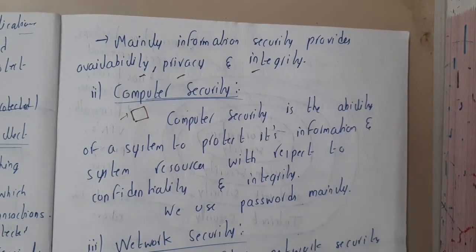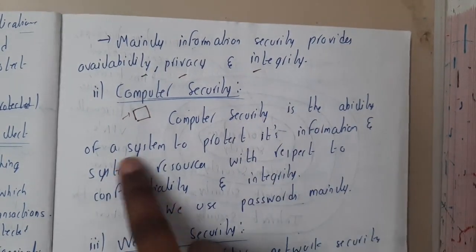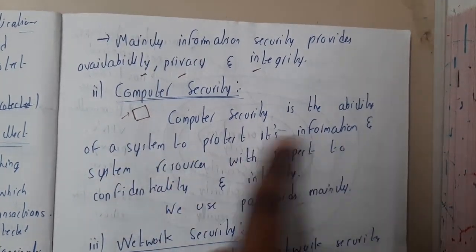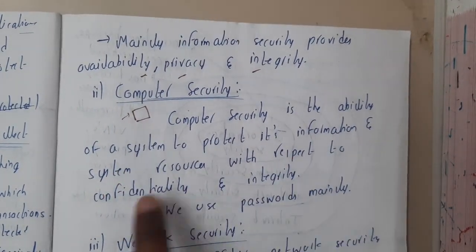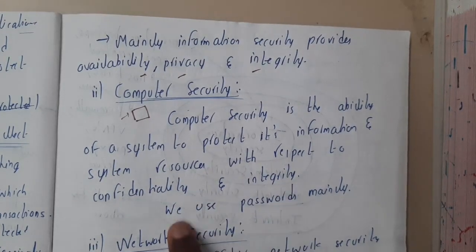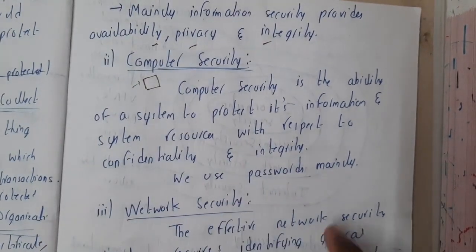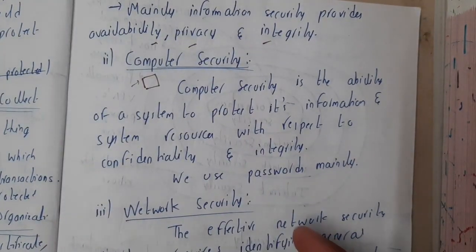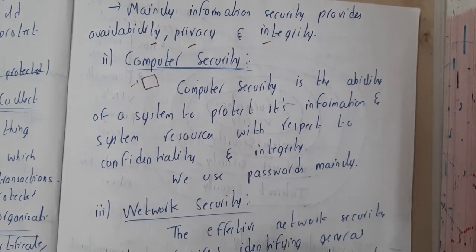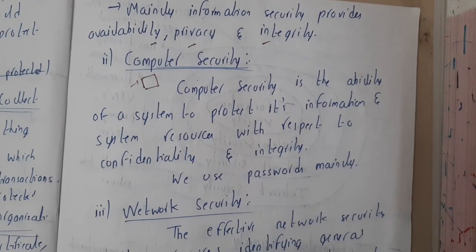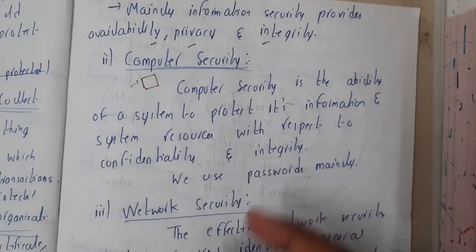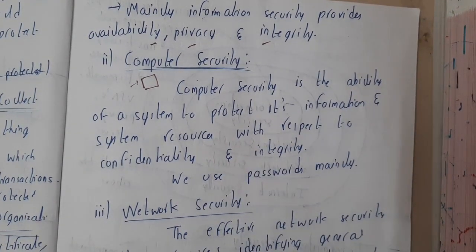In our homes, we keep reasonable passwords because we are the only users. Computer security is the ability of a system to protect its information and system resources with respect to confidentiality and integrity. We mainly use passwords; some people also zip their files with password locks, and there are multiple applications through which you can keep passwords on folders as well.